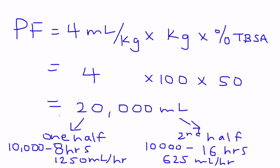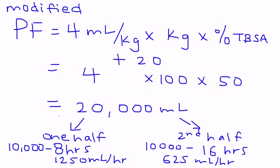There's one other modification called the modified Parkland formula, which is essentially the same thing. It just adds an additional 2 liters or 2,000 mLs to cover maintenance fluid needs. That's the only difference between the Parkland formula and the modified Parkland formula.